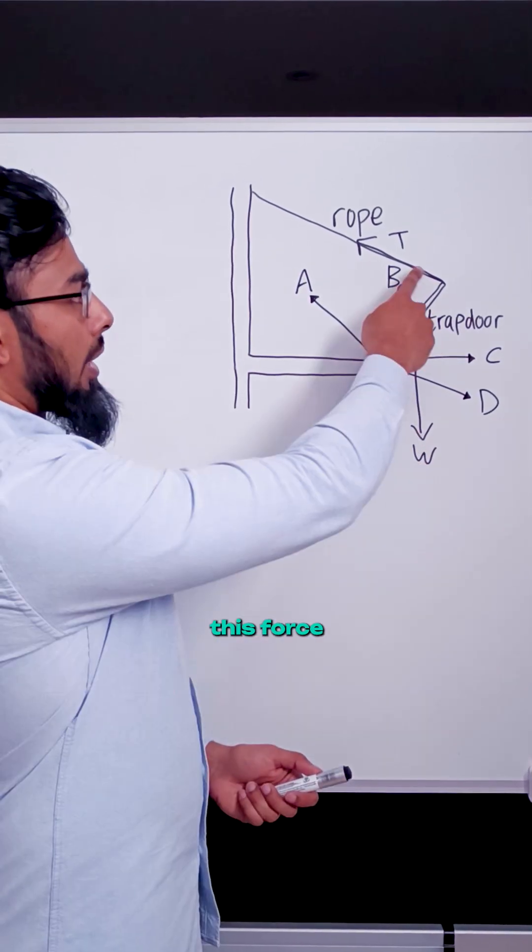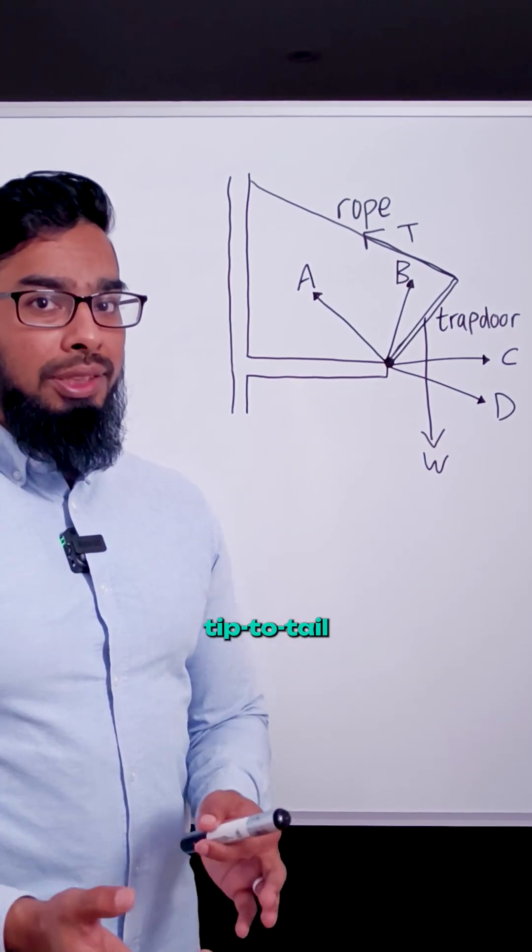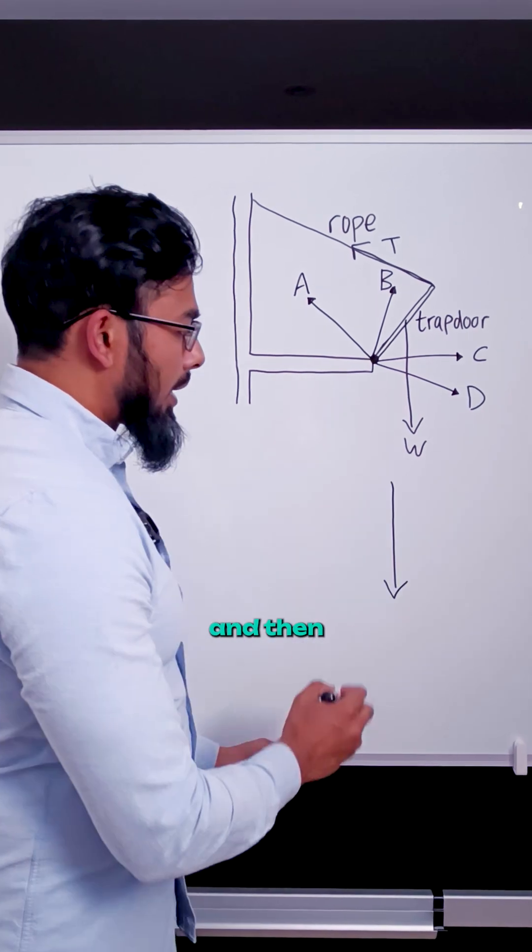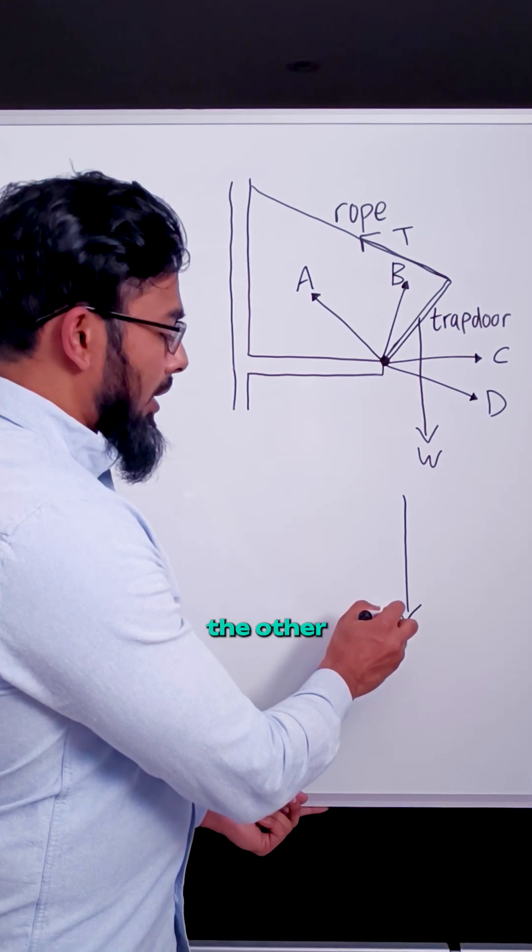So let's take out this force and this force and draw them separately, tip-to-tail. The idea of the tip-to-tail method is we take one of the forces and draw it, and then we immediately draw the next force from the tip of this force and connect it to the tail of the other force.